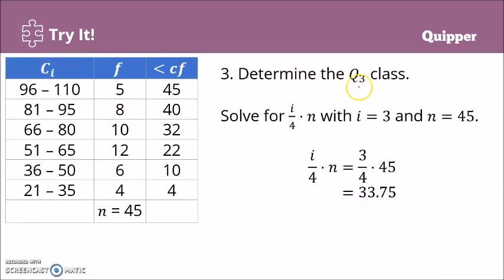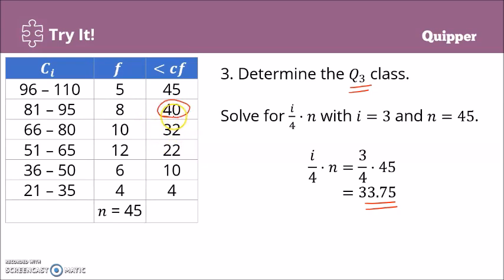Next, let's determine the third quartile class. We solve for i over 4 times n, where i is 3 and n is still 45. Substituting: 3 over 4 times 45 gives us 33.75. We look for the closest less than cumulative frequency that is greater than 33.75. That value is 40 — this is the closest cumulative frequency greater than 33.75. Therefore, this class is the third quartile class. The information from this class will be used to solve for the third quartile.